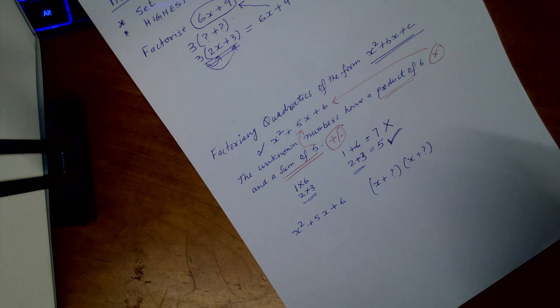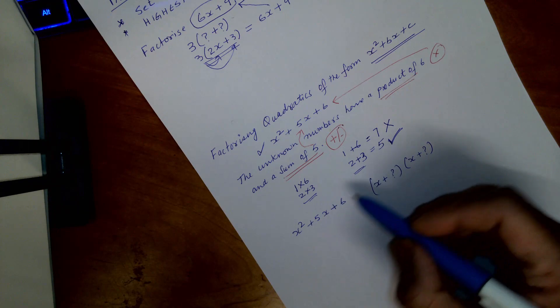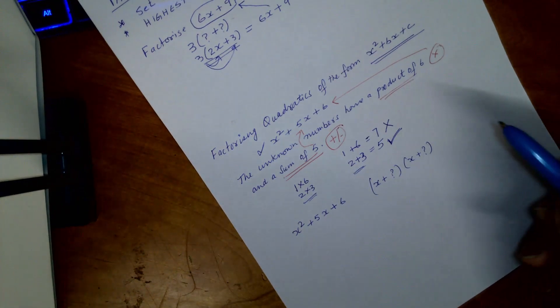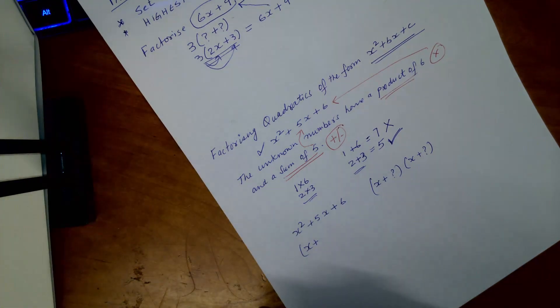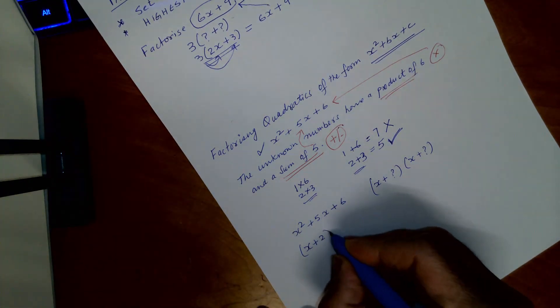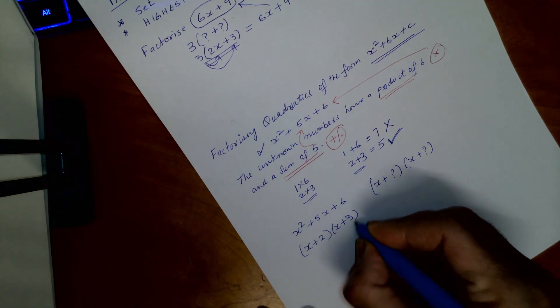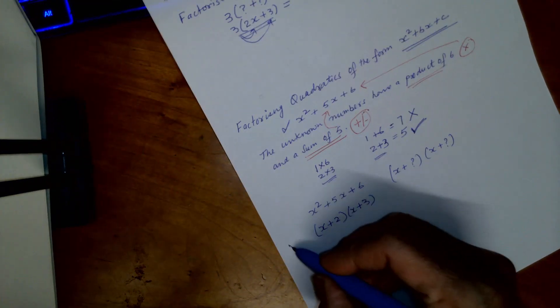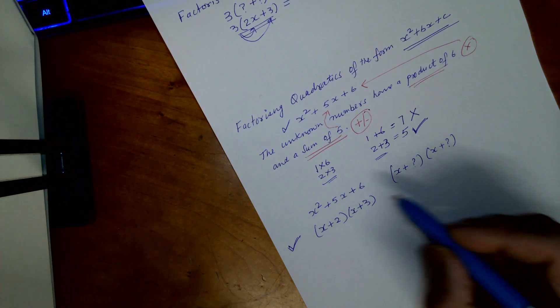What you can write here, where we know that number is 2 and 3, we can write as x plus 2, x plus 3. Okay, so this is one method you can achieve. There is another way of doing this. The reason I'm saying the other method as well, because when we do complex